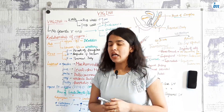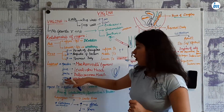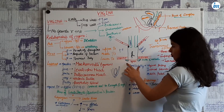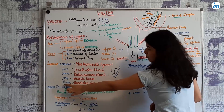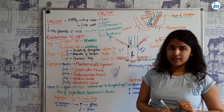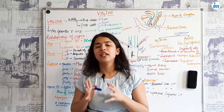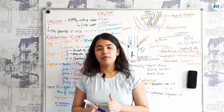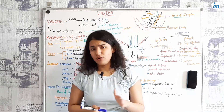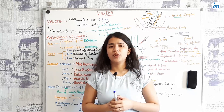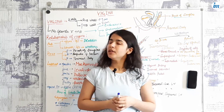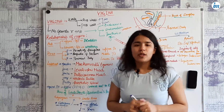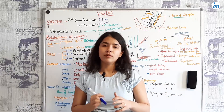V is for the vestibular bulbs — as you can see here — and B is for the Bartholin glands. The Bartholin glands are located in the groove between the hymen and the labia minora, which I have already discussed in my previous video on external genitalia.